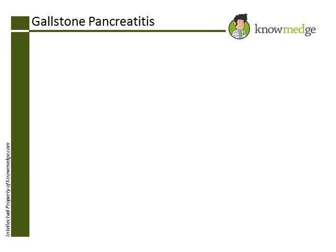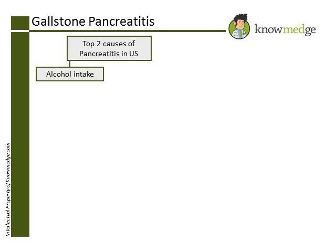Based on her symptoms and history, it is likely that the patient has acute pancreatitis. This is characterized by an inflammation of the pancreas that appears suddenly and lasts for days. The two main causes of pancreatitis in the US are alcohol intake and gallstones. The patient has no history of alcoholism to suggest alcoholic pancreatitis.